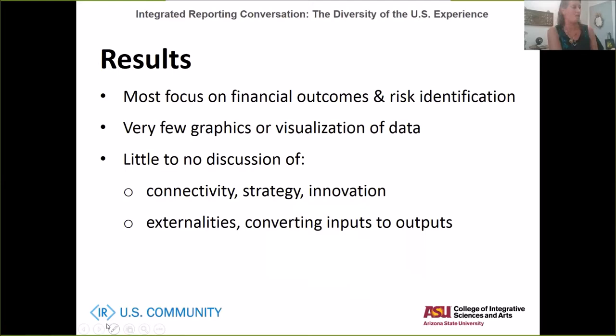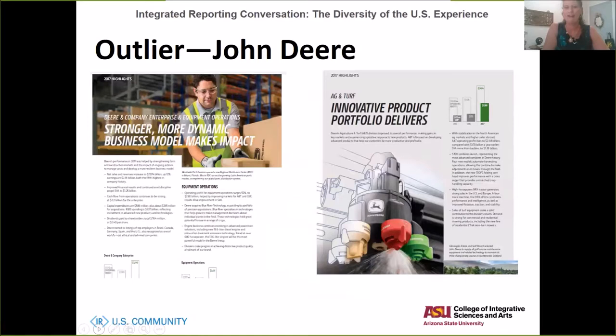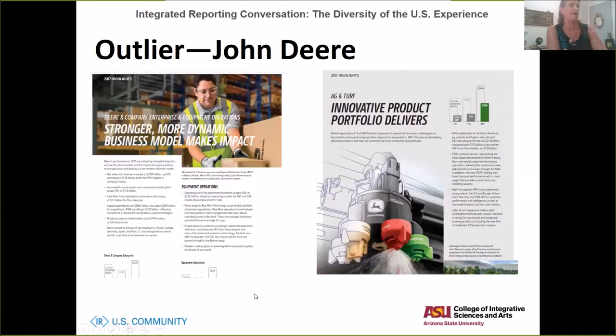One outlier that was surprising was John Deere — they were the company that did the best job in the reports I looked at of talking about how they're setting themselves up for success in the future. They talked about innovation, product design, and research and development. This was the closest any company came to visualization, even though it wasn't value-creation-story visualization. It was at least catchy and emotionally engaging, and they talked about the difference these innovations would have on their future capacity to create value — which I think is very helpful from a shareholder perspective.